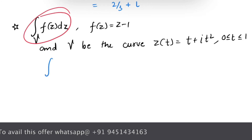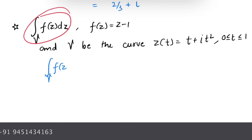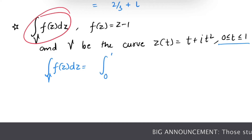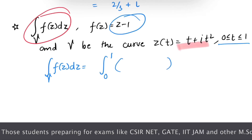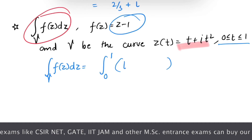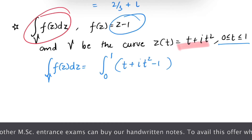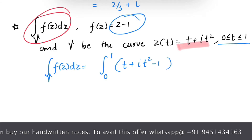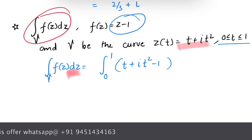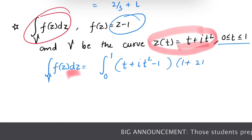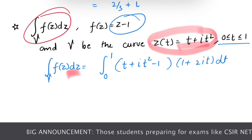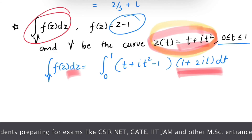We integrate along contour γ of f(z) dz, with t from 0 to 1. Substituting, f(z) = z − 1 = (t + i·t²) − 1. For dz, we differentiate z(t) with respect to t, giving dz = (1 + 2i·t) dt.